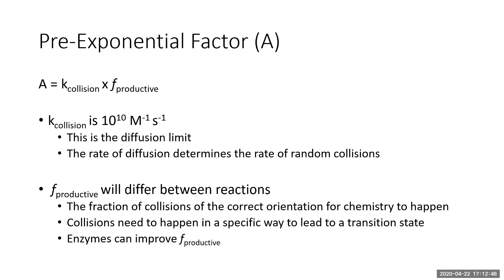The rate of diffusion is often what determines the rate of collisions because collisions are random and limited by diffusion. However, reactions don't always happen every time there is a collision. You have to account for those through something called f, the fraction of productive collisions, which differs between reactions — it's the fraction of collisions of the correct orientation.